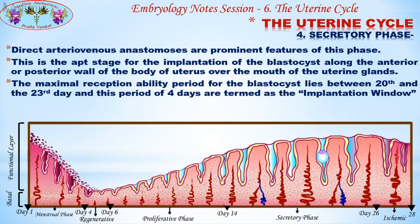The secretory phase is the ideal stage for implantation of the blastocyst along the anterior and posterior wall of the body of the uterus, over the mouth of the uterine glands. The maximal receptivity period for the blastocyst lies between the 20th and 23rd day, and this period of four days is termed the implantation window.